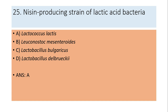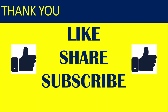Twenty-fifth question: Nisin-producing strain of lactic acid bacteria — Lactococcus lactis, Leuconostoc mesenteroides, Lactobacillus bulgaricus, or Lactobacillus delbrueckii? Answer is A: Lactococcus lactis.